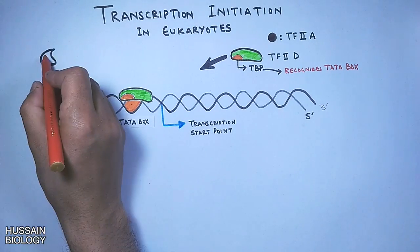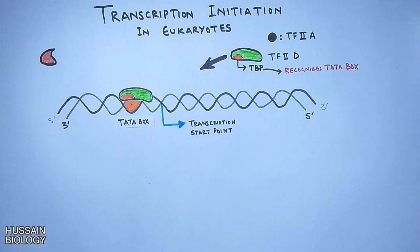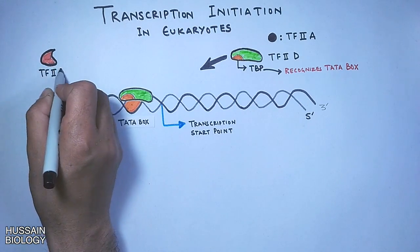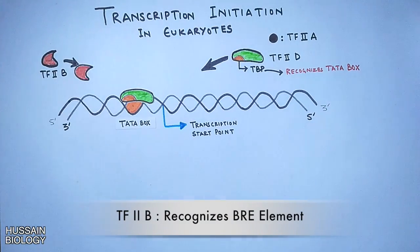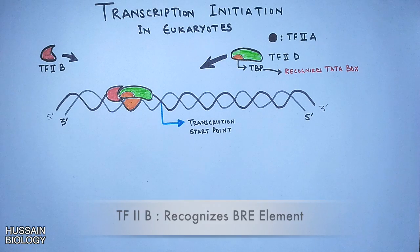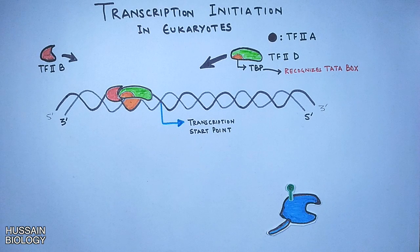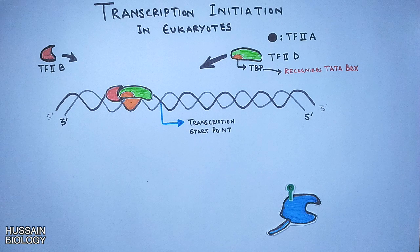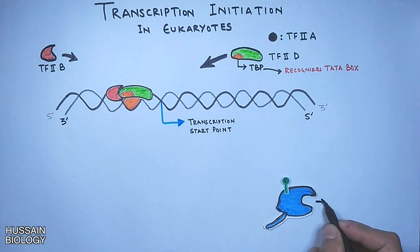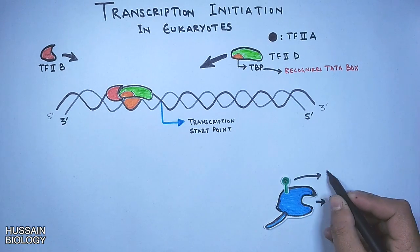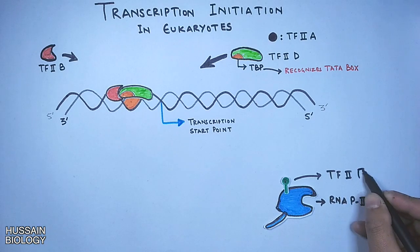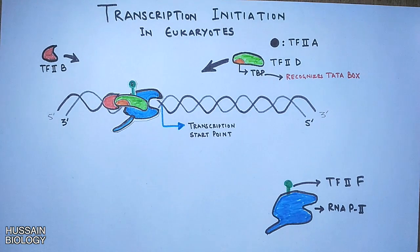Binding of TF2D to the TATA box recruits another transcription factor, TF2B, which comes in and joins the complex. Now we have RNA polymerase enzyme shown in the diagram below, which marks its entry along with transcription factor TF2F. RNA polymerase and TF2F are recruited to the complex by TF2B.